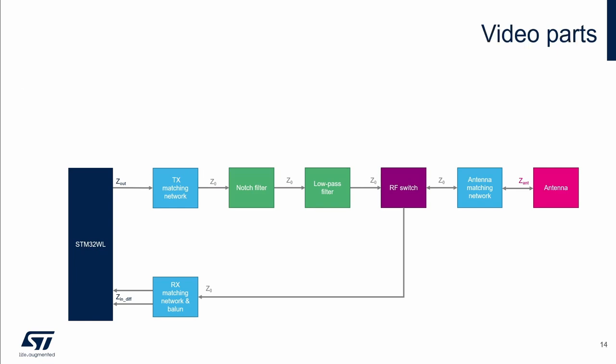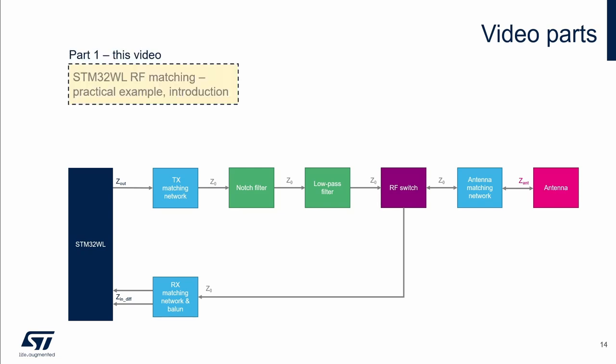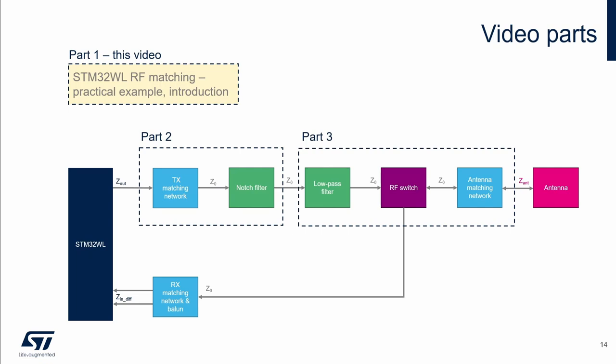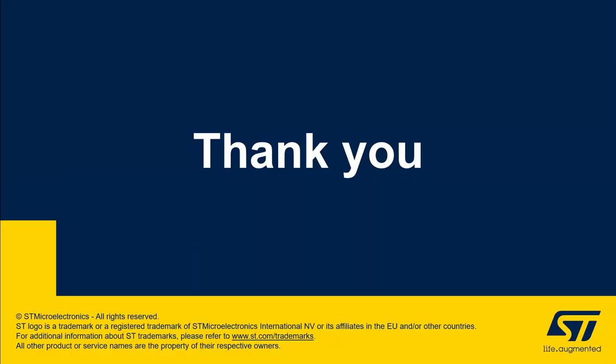The video series is divided into 4 parts. The first one is this introductory video. The second part is about the transmitter matching network and the notch filter. The next part is about the low-pass filter, RF switch, and the antenna matching network. The last part covers the receiver matching and the balun circuit. Thank you for your attention.